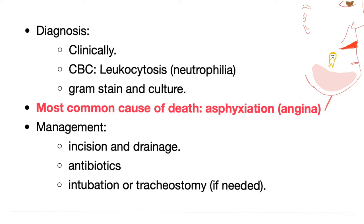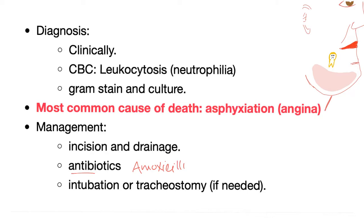How to diagnose Ludwig Angina clinically: CBC to show leukocytosis, and Gram stain and culture. The most common cause of death is asphyxiation. Management includes incision and drainage, antibiotics such as amoxicillin-clavulanic acid, and intubation or tracheostomy if needed to secure the airway.